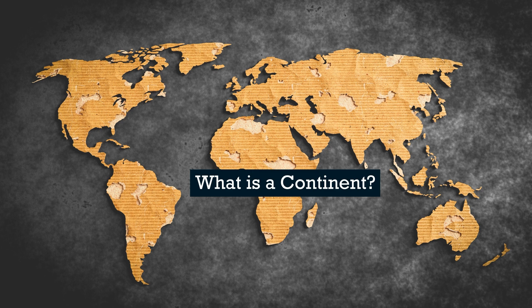Summary: A continent is a large and distinct landmass, separated from others by natural features such as oceans and mountain ranges. There are typically seven continents recognized: Africa, Antarctica, Asia, Europe, North America, South America, and Oceania. Each continent is characterized by its geography, geology, culture, and population, and serves as a major geographical division of the Earth's surface. Continents help us understand the diversity of natural and human phenomena, and provide a framework for exploring how people, cultures, and ecosystems vary across the planet.